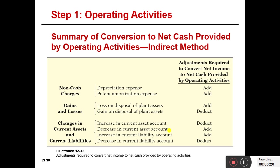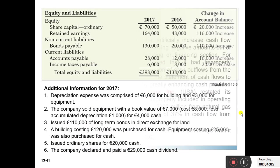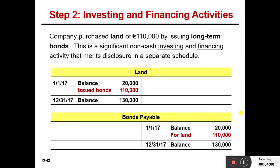Here is a summary of the conversion to net cash provided by operating activities using the indirect method. Non-cash charges and non-cash expenses will always be added — depreciation expense, amortization, depletion, etc. — but mostly you will use depreciation and amortization. For gains and losses: loss will be added, gains will be deducted. And for changes in current assets and current liabilities, apply the rule of thumb. Now let's go to investing and financing activities.